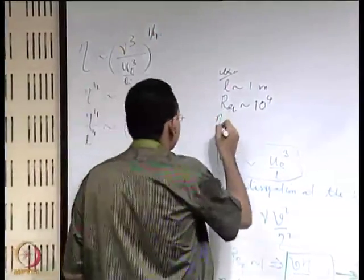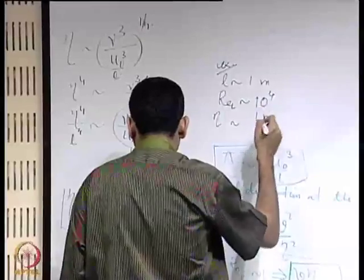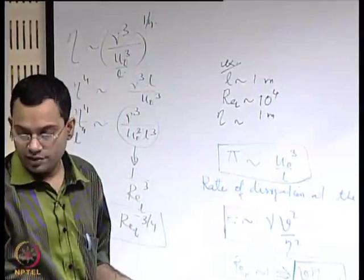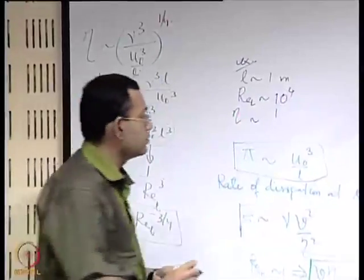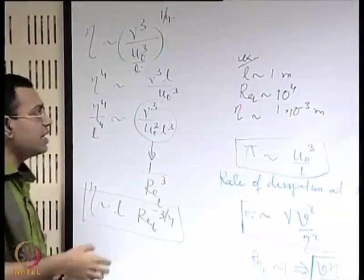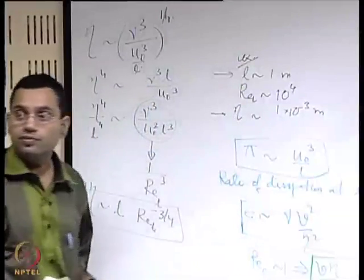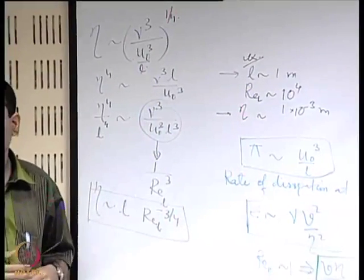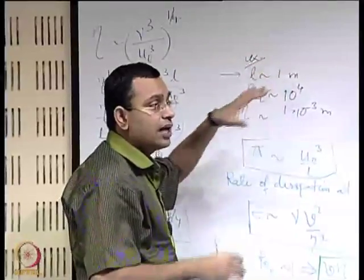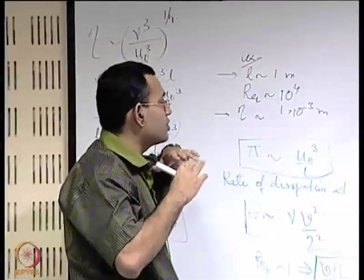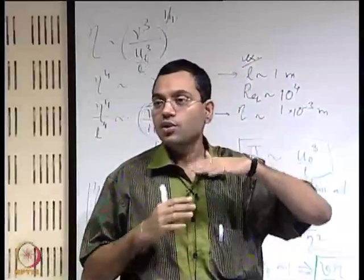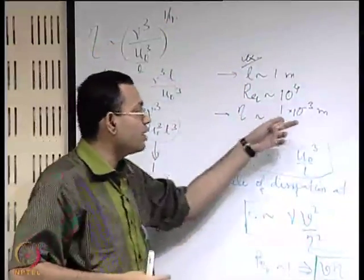Then what will be eta? It is 1 meter into Reynolds number to the power minus 3/4. If you make the Reynolds number larger and larger, the disparity between l and eta becomes more and more. 10,000 is not a very large Reynolds number — it is just moderately large. If you make the Reynolds number really very large, this disparity will be more and more, and you have eddies at almost all intermediate length scales between these. That is what we say: the existence of a wide range of length scales differing in order of magnitude by at least 1000.